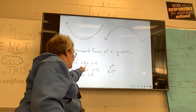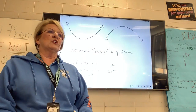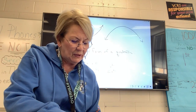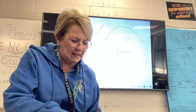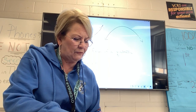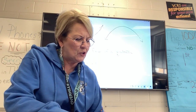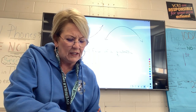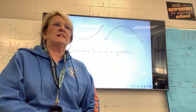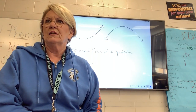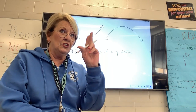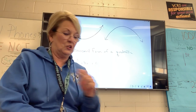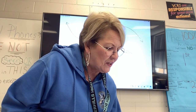It doesn't have to have an X term or a C term. But we want you to know what standard form looks like: AX squared plus BX plus C. The important thing about standard form is that if you put your equation in standard form, you should be able to identify what is your A, what is your B, and what is your C. That's very important — you have to know what A, B, and C are for many things we're going to do.